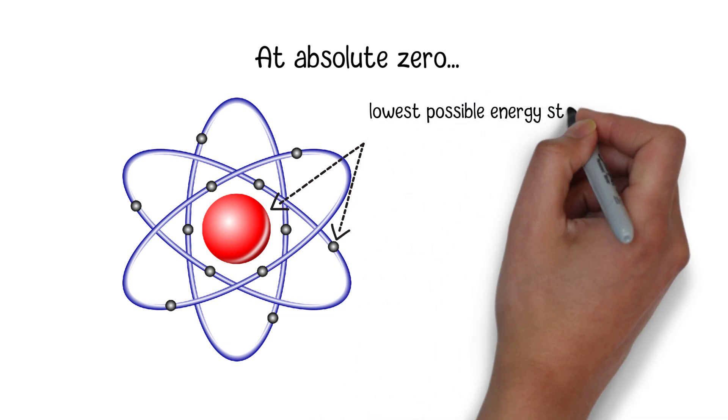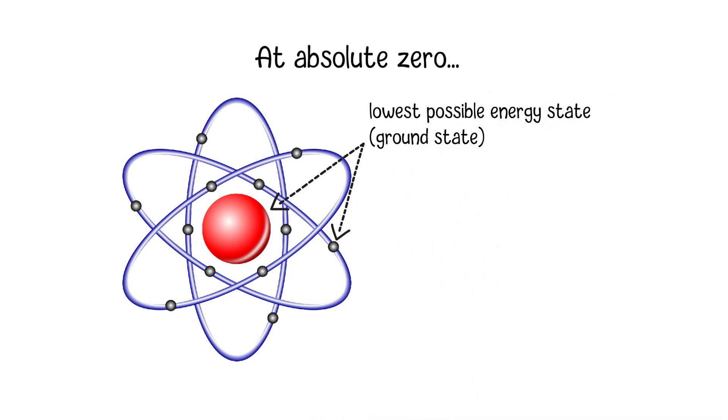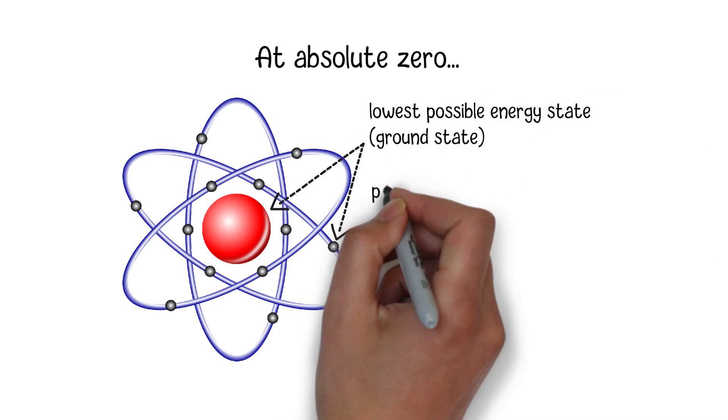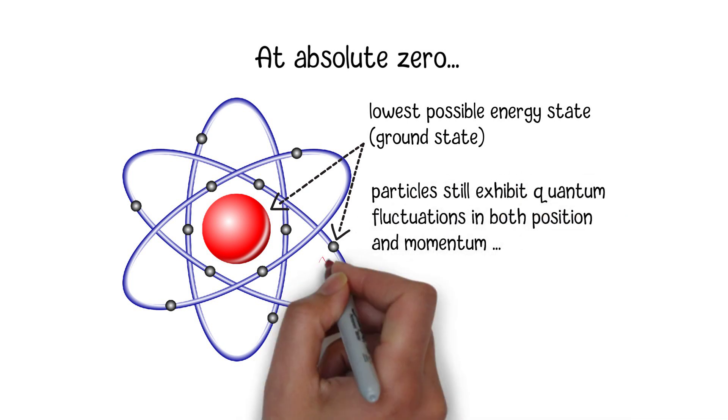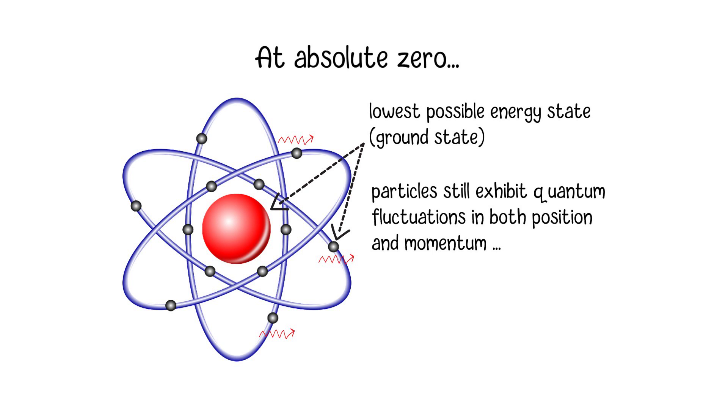At absolute zero, particles are in their lowest possible energy state, known as the ground state. Even in this state, particles still exhibit quantum fluctuations in both position and momentum, leading to non-zero uncertainties in these properties.